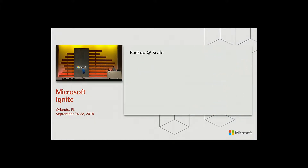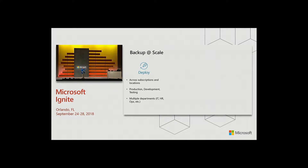Let's get started by talking about what it means to successfully manage an environment. We need to talk about deployments — this is where we deploy that backup infrastructure. We end up with multiple environments: dev, test, prod, performance, et cetera. And then we have multiple resource groups, where we separate out our environments, applications, or departments like IT, finance, HR, et cetera.